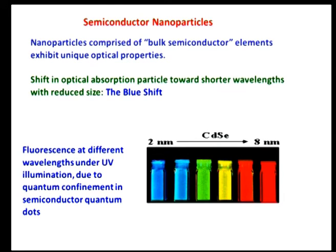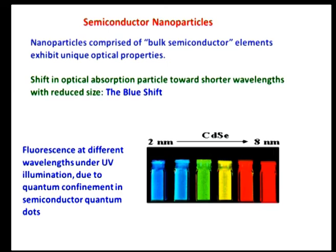As a vivid example, what is shown here is the progressive change in the appearance of nanoparticles of cadmium selenide — a direct band gap semiconductor — as the particle size is increased from 2 nanometers to 8 nanometers, or reduced from 8 nanometers to 2 nanometers. Under fluorescence and UV illumination, the same material shows a complete change in appearance from red all the way to blue as size is reduced. This is a quantum mechanical effect known as the blue shift, arising from quantum confinement.